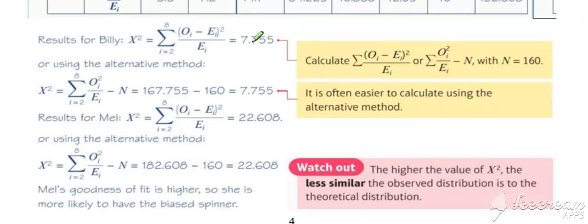So for Billy, we've got a goodness of fit statistic of 7.755 and the equivalent result for Mel, 22.608, suggesting Billy's results match up with the expected much more closely than Mel's do. So Mel's goodness of fit is higher, so she is more likely to have the biased spinner.